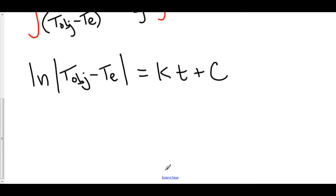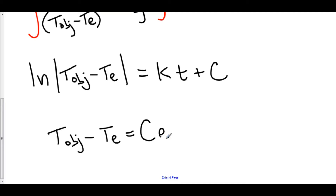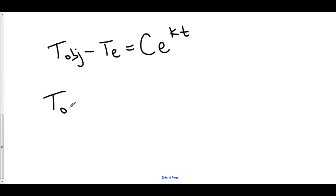We can skip a couple of steps. The natural log of the absolute value of T-object minus T-e — we can get rid of the natural log by raising both sides to the power of e. When you do that, T-sub-object minus T-sub-environment comes out, and on the right-hand side we have c·e to the kt. Now we have our function value T-sub-object is equal to the environment temperature plus c·e to the kt.